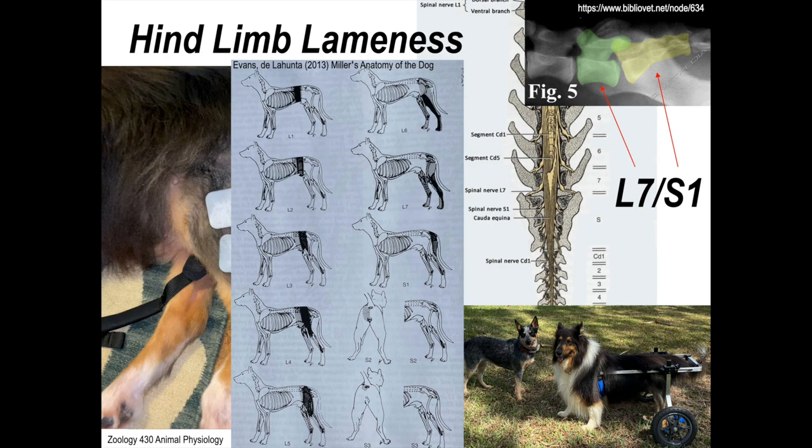But in dogs, and especially German shepherds, they get something called degenerative lumbosacral stenosis, which can be a collapse of the L7, S1 intervertebral space, or arthritis, or a misalignment, as you can see here in this x-ray.